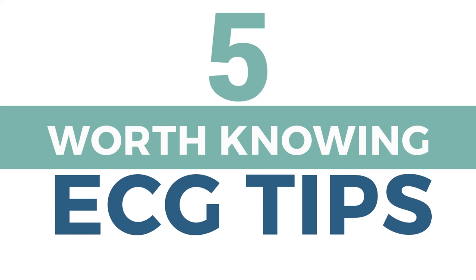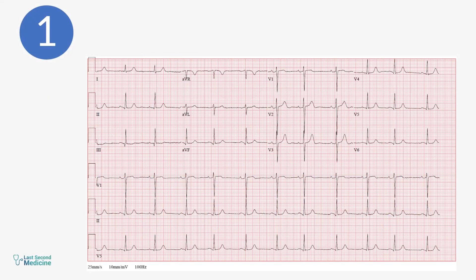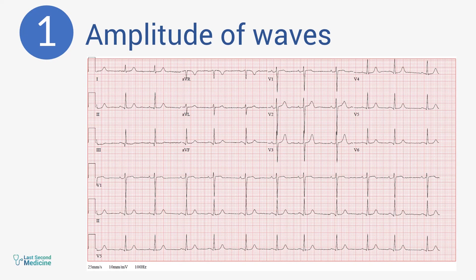Number one: amplitude of waves. When you come across an ECG where you think the waves are either too small or too big, before commenting on the waves themselves, see the bar at the start of every ECG. This bar denotes the voltage at which the ECG is recorded. Standard voltage is one millivolt, equal to a height of 10 small or two large squares of ECG paper. Any voltage lesser or more than this will record an ECG where the waves will appear smaller or larger than usual.